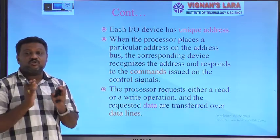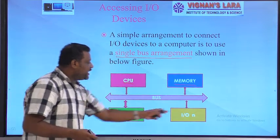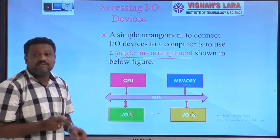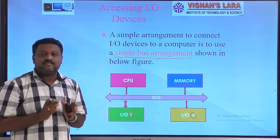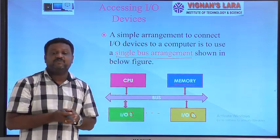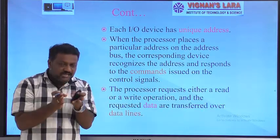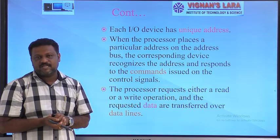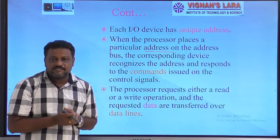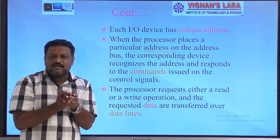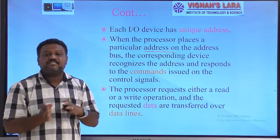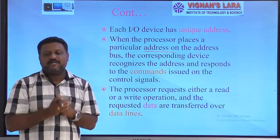Each I/O device has a unique address, because we have a number of I/O devices numbered from 1 to N. Whenever the CPU wants to communicate with any specific I/O device, the CPU generates the address of that I/O device. Once the CPU generates that address, it is received by all I/O devices, and the one device whose address matches responds.